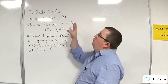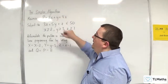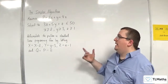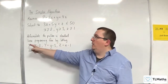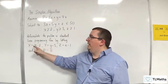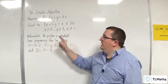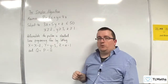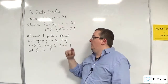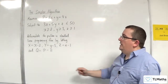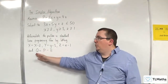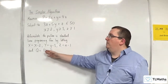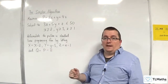We're going to reformulate the problem in standard linear programming form by letting capital X be little x take away 2, capital Y be little y take away 3, capital Z be little z take away 1, and capital Q replacing P take away 11.